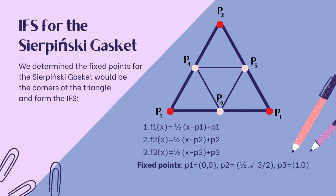The IFS for the Sierpinski Gasket. We determined the fixed points for the fractal shape would be the corners of the triangle and form the IFS. So we will focus on the fixed points P1, P2, and P3. We use those to later define the functions for our IFS in the regular Sierpinski Gasket.